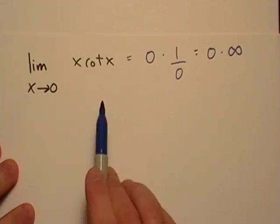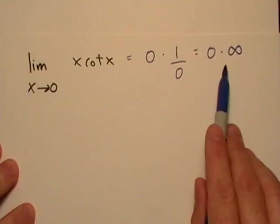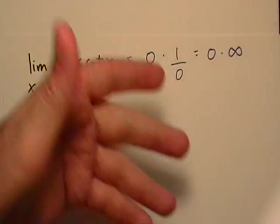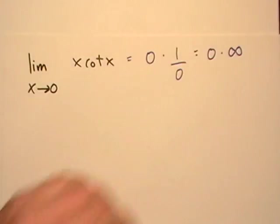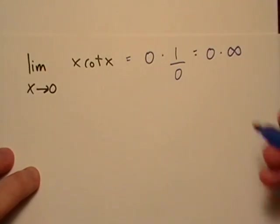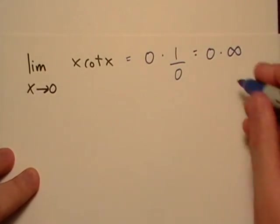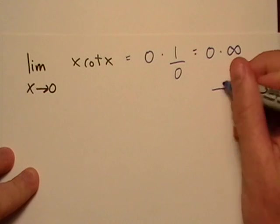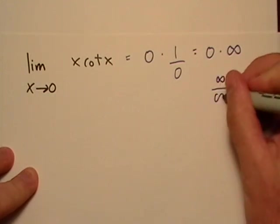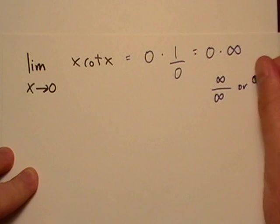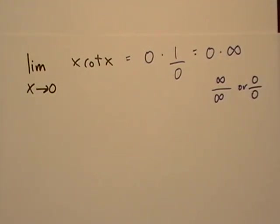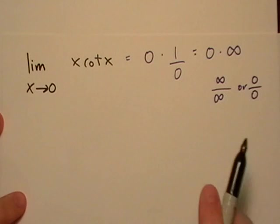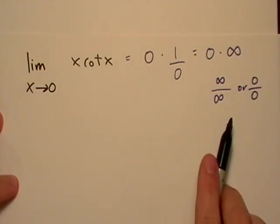So the next thing I want to do is, anytime we run into this indeterminate form right here, and I've got it listed right here, what I like to try to do is see if there's any way I can rewrite this expression and get it into this form, or zero over zero, see if I can do something like that with it. Because these forms right here are generally easier to work with.